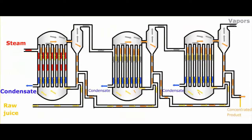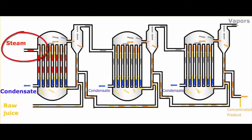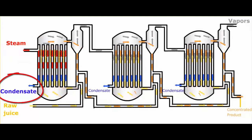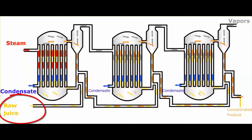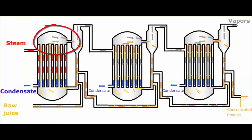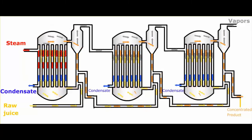Let's first look at this animation of a triple effect evaporator. We have steam coming in and entering the first effect, and the condensate leaves at the bottom of the heating section. The raw juice is entering from the bottom and it rises in those tubes as it heats to the top, where some of the liquid turns into vapor and the other concentrated liquid then moves down.